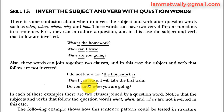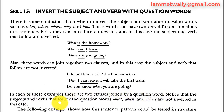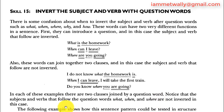'When I can't leave, I will take the first train.' 'Do you know where you're going?' In each of these examples there are two clauses joined by a question word. Notice that the subject and the verbs that follow the question words — what, when, and where — are not inverted in this case.